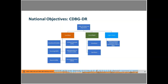Activities that meet a slum and blight national objective are activities that aid in the prevention or elimination of slums or blight in a designated area. There is an area basis — where an area is designated as slum and blight — and spot basis, which is a single isolated project not included within a designated slum or blight area.